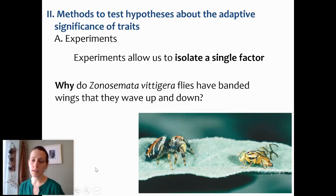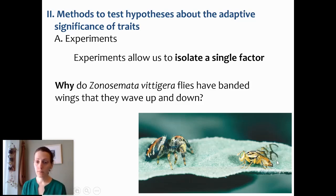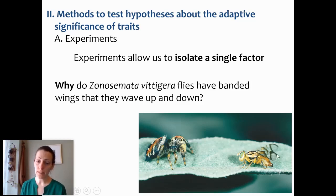We're going to look at this system. We've been out in the world and noticed that these flies, Zonosomata vitigera flies, have these banded wings. We've noticed other flies that don't have wings like this, and so we're curious: what is the significance of this trait? Is it just through chance that this trait arose? Is it some kind of adaptation? Does it increase the fitness of individuals that have these banded wings? All individuals in the species look like this, so we're going to have to do some manipulations to create variation to test the significance of these wings.